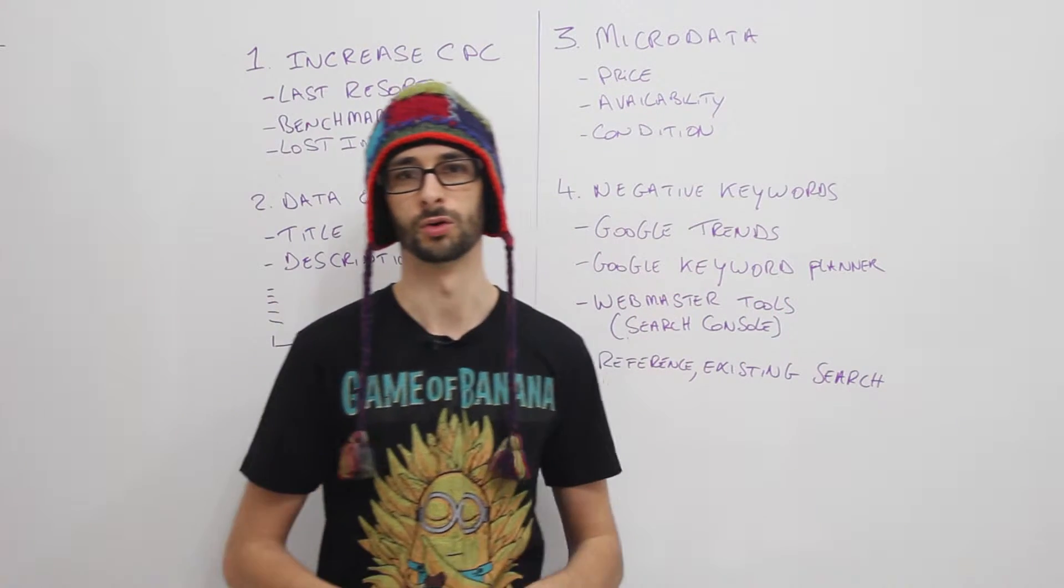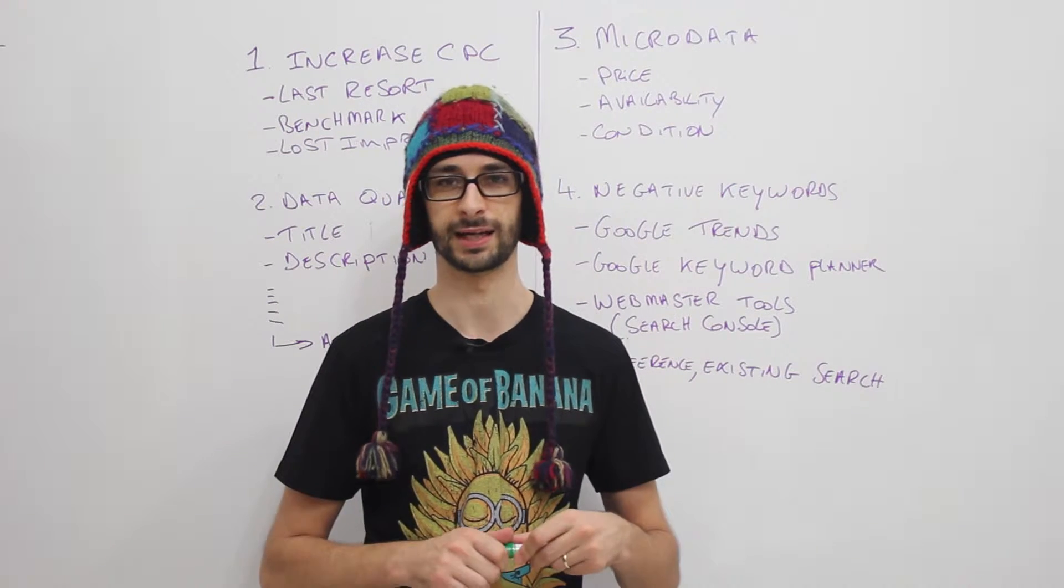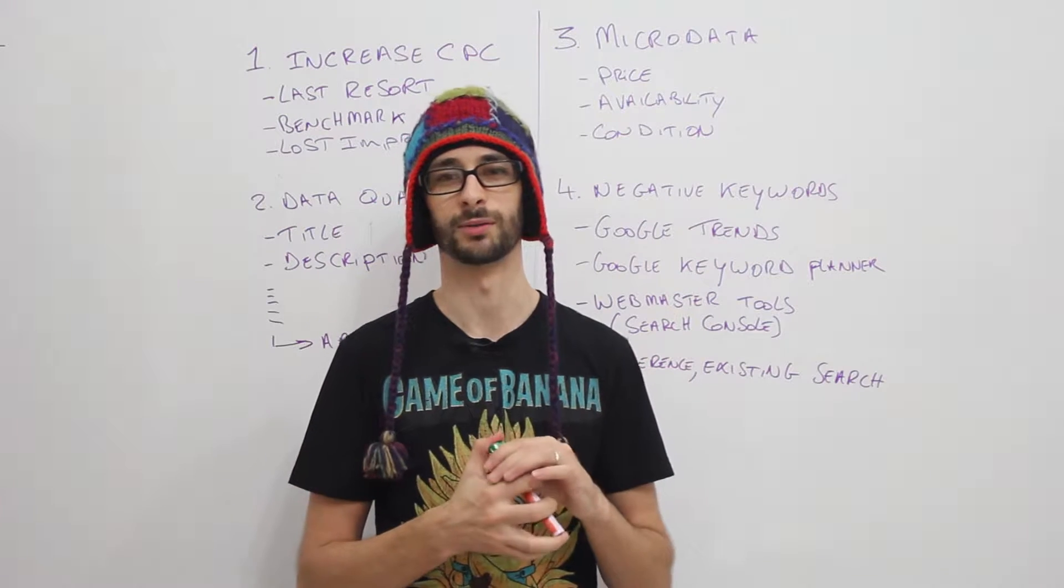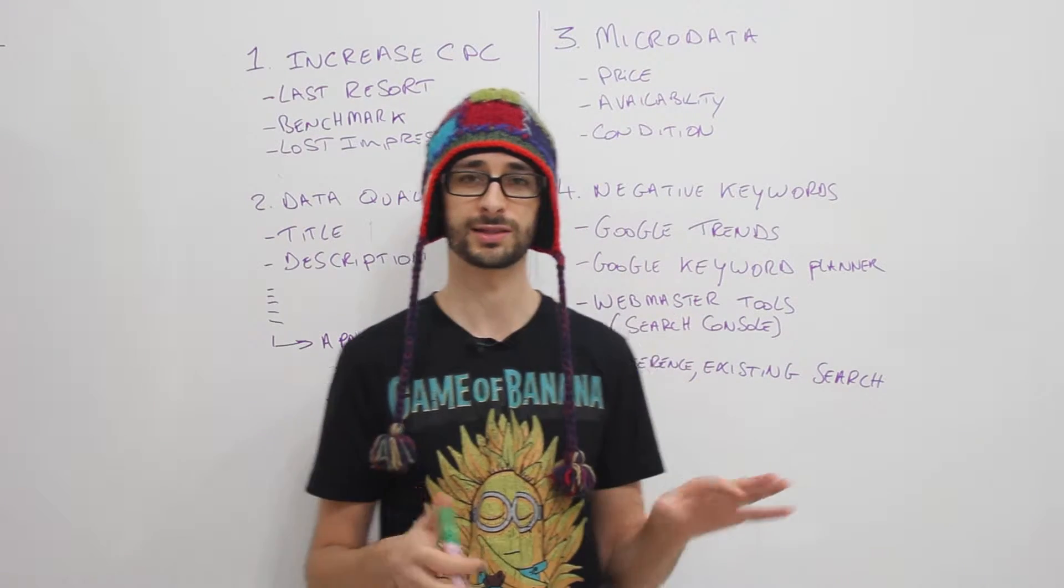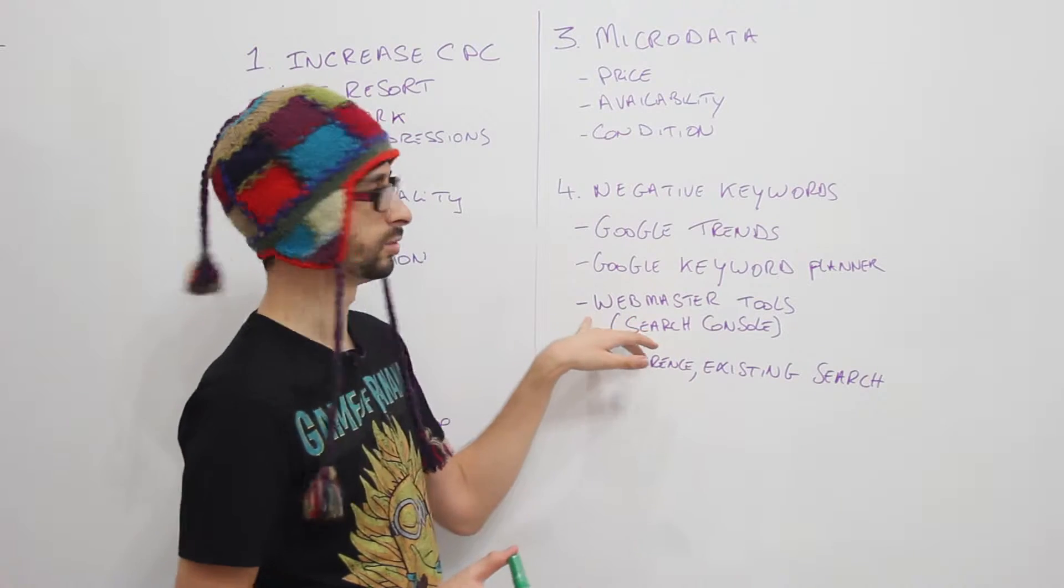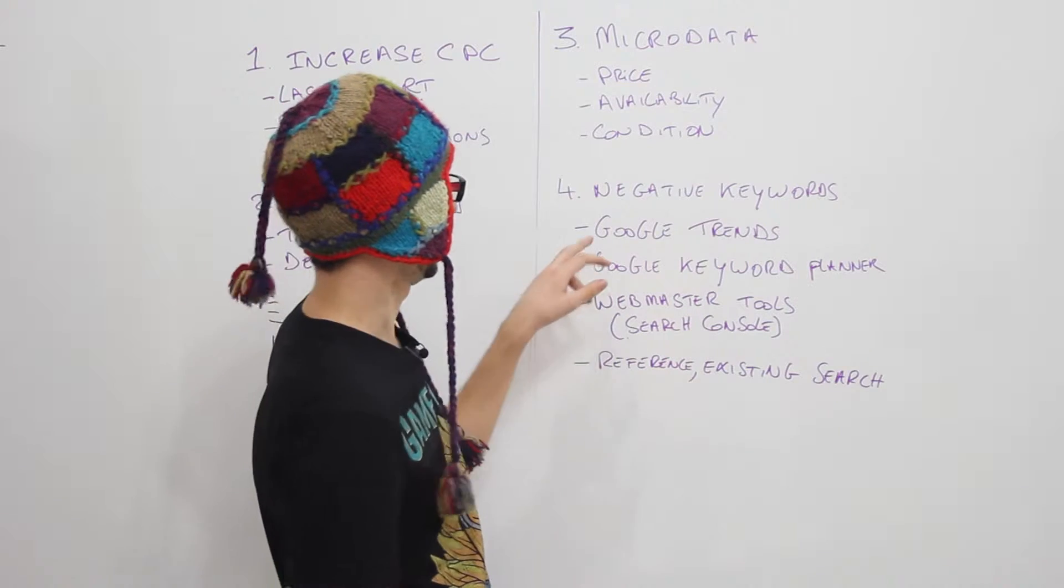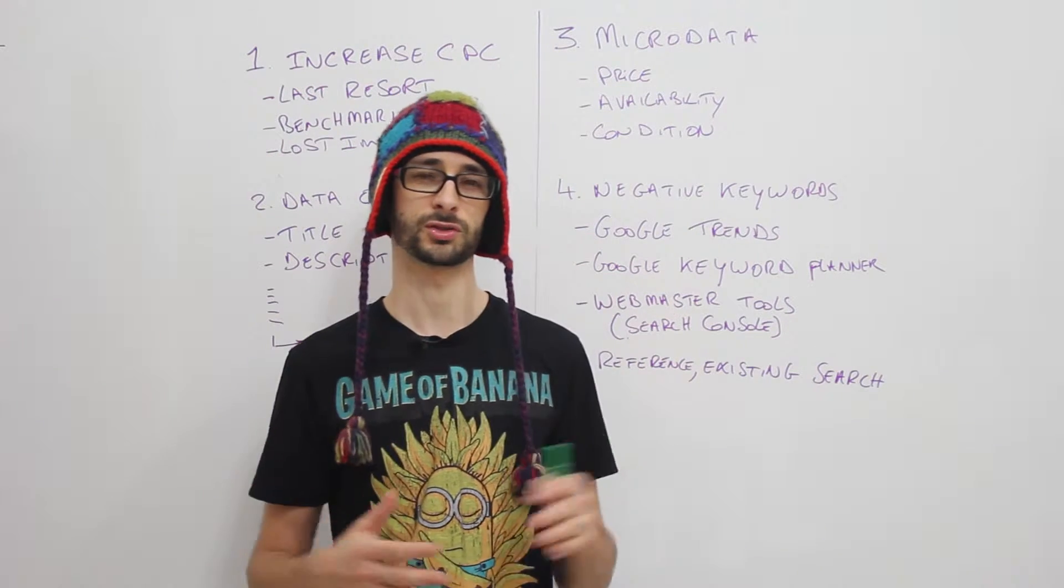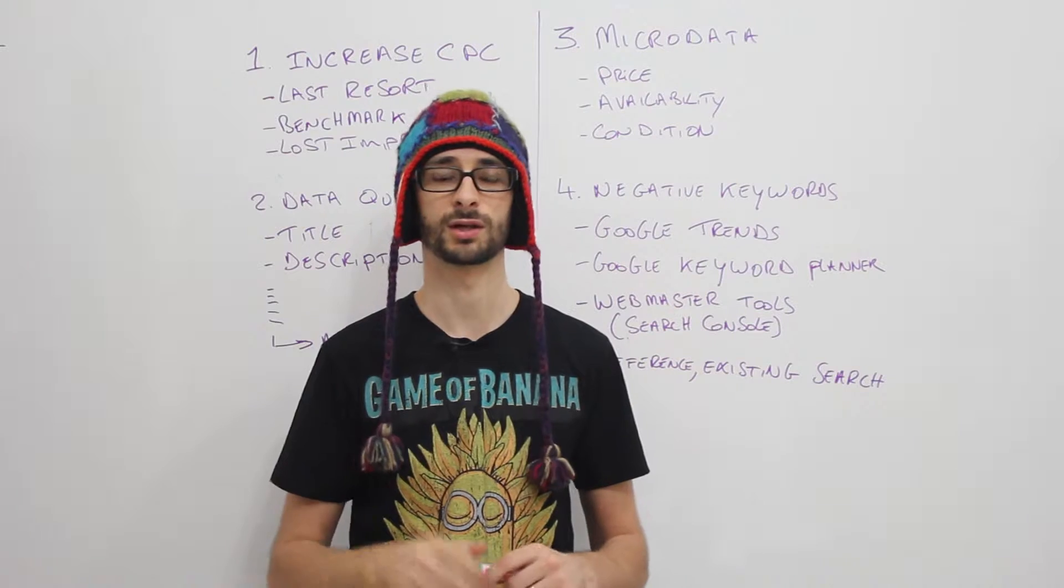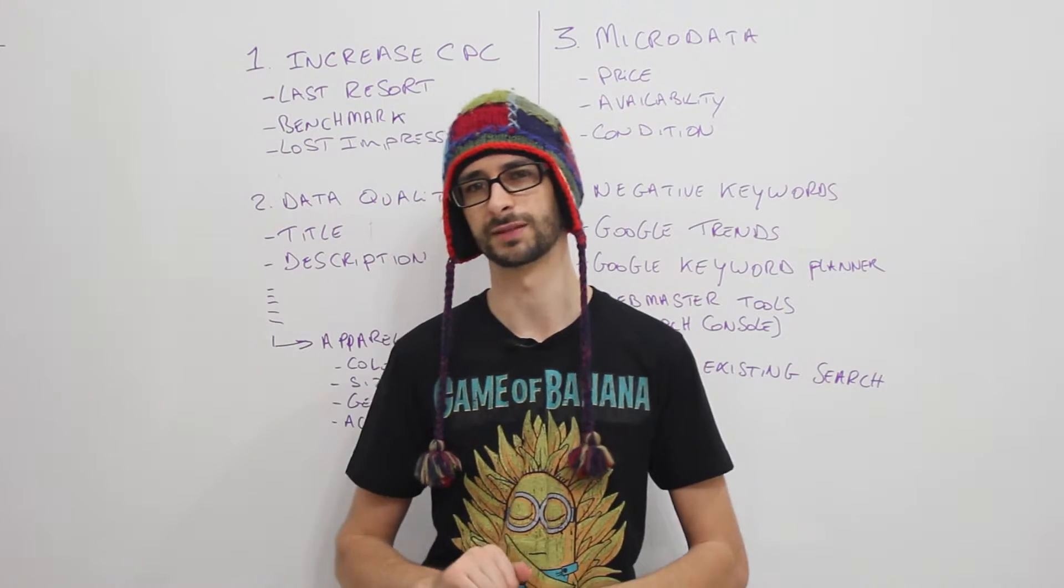You can also use the keyword planner for researching if your existing negative keyword is actually still a negative item by checking how many search terms, search volume there is. But what I want to explain is that with the Google planner you cannot see how much traffic you gain themselves. So it's better to use the webmaster tools to see if you have a good impression rate with that search term. You can also use Google Trends for very popular search terms to see how the trend improves or decreases. There's also a little forecast that you can see for a couple of months and then you can see if it's going to improve a lot. If it's going to improve a lot, then maybe you should remove the negative keyword.